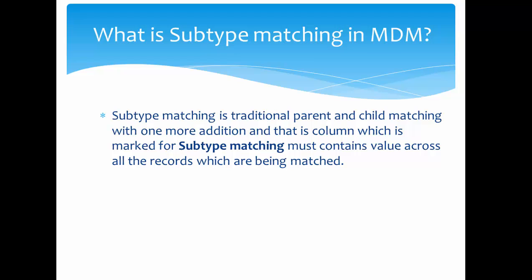What is subtype matching in MDM? Subtype matching is traditional parent and child matching with one or more additional columns marked for subtype matching. This subtype matching column must contain values across all the records which are being matched. Subtype matching is traditional parent and child matching — for example, you have the customer and its address, where address is a child to the customer base object table.